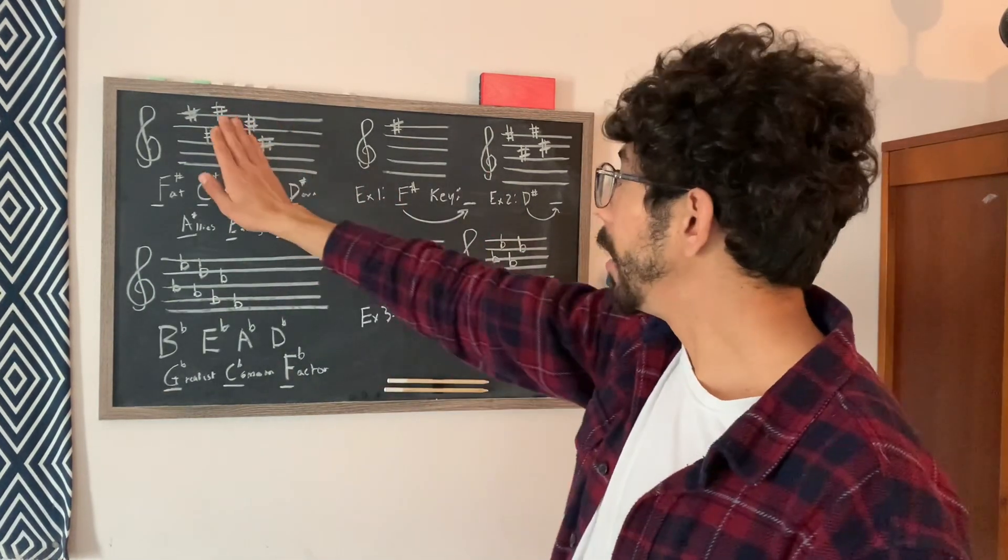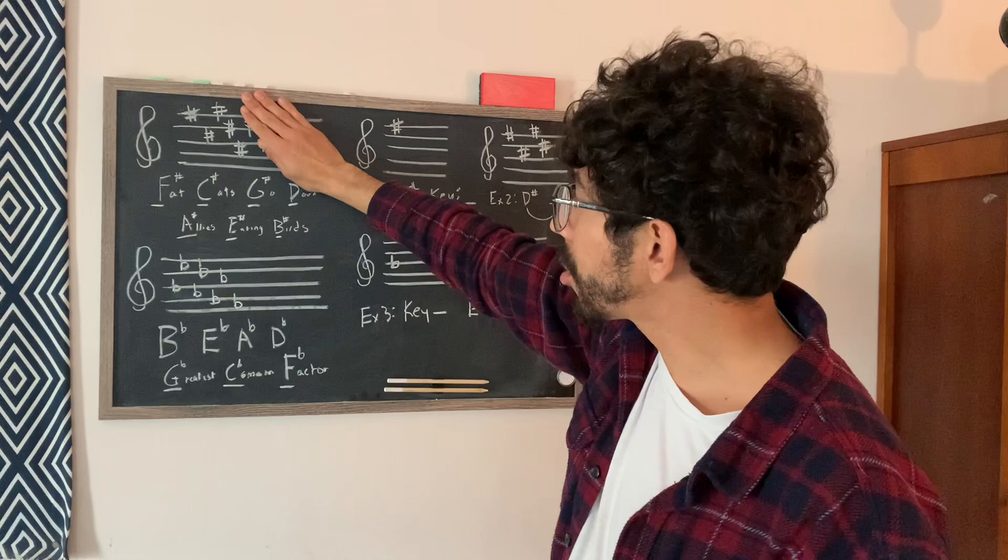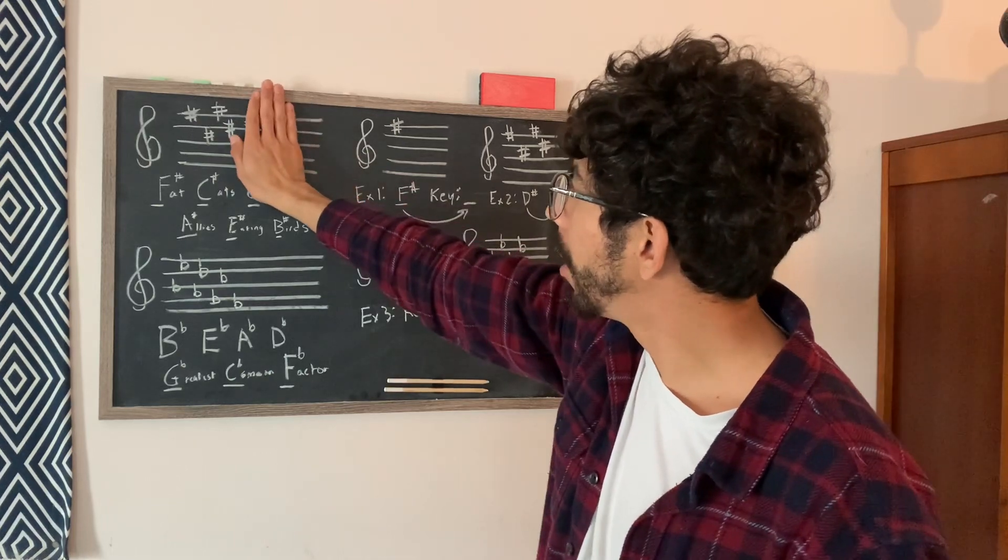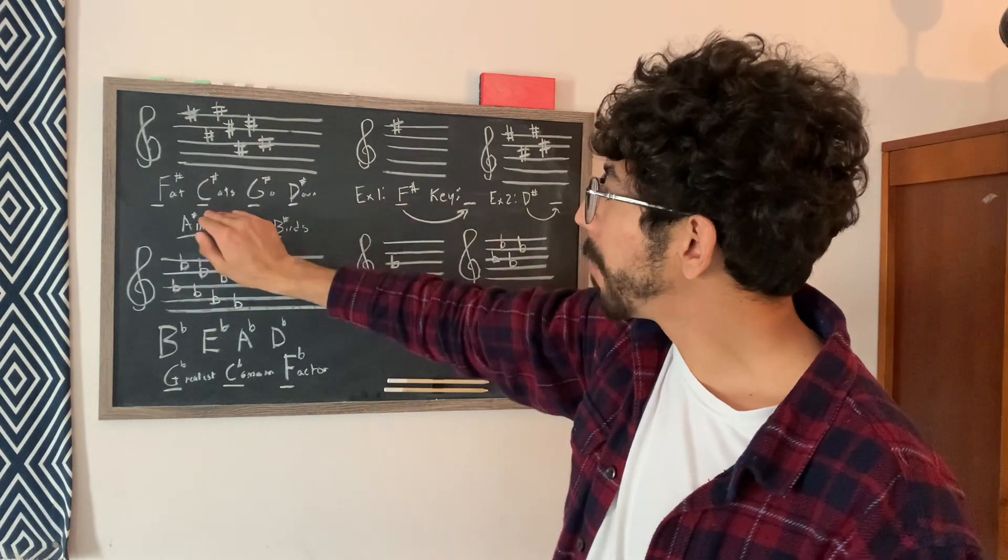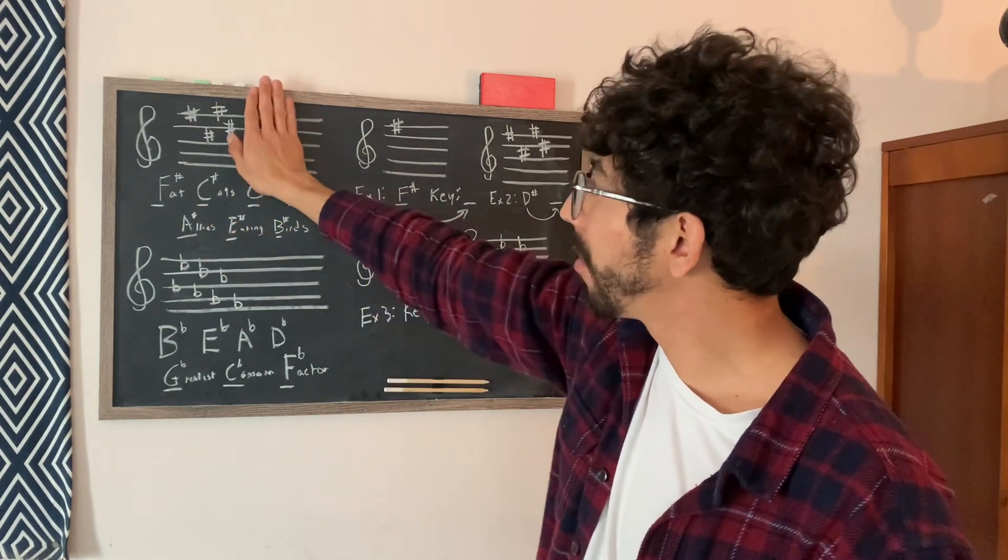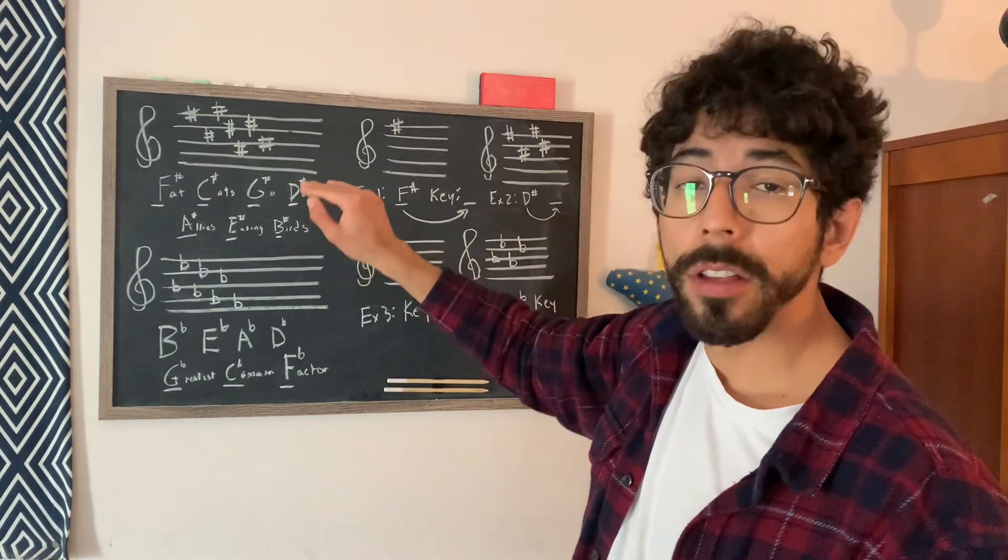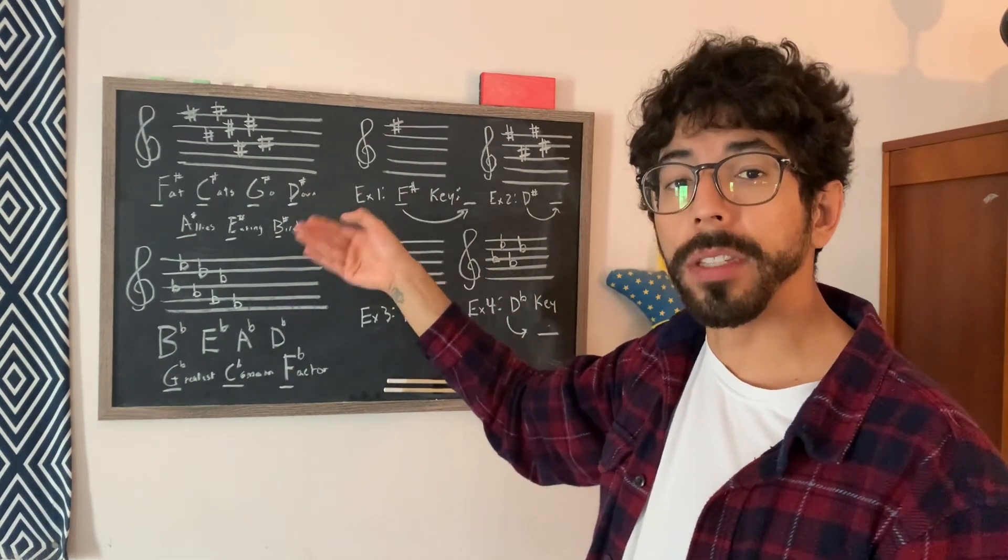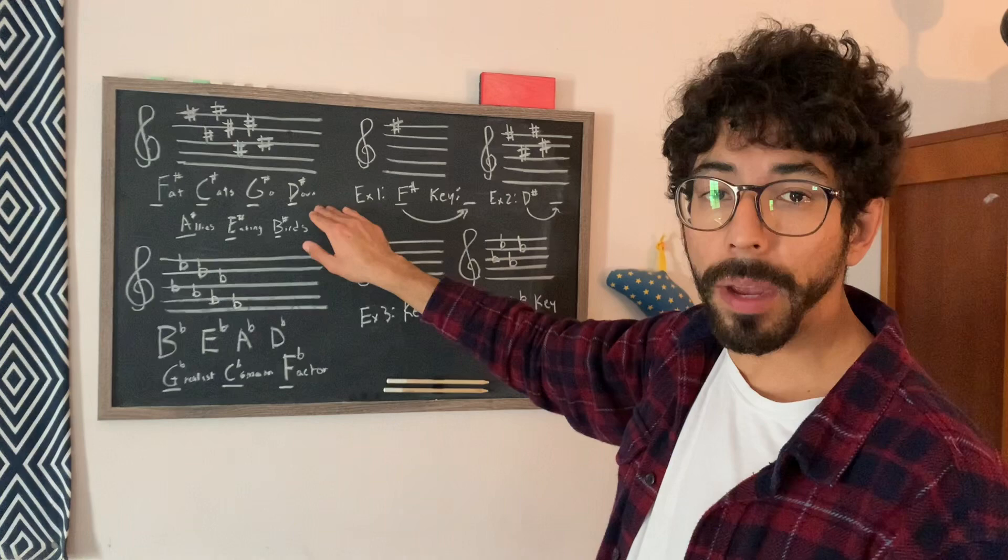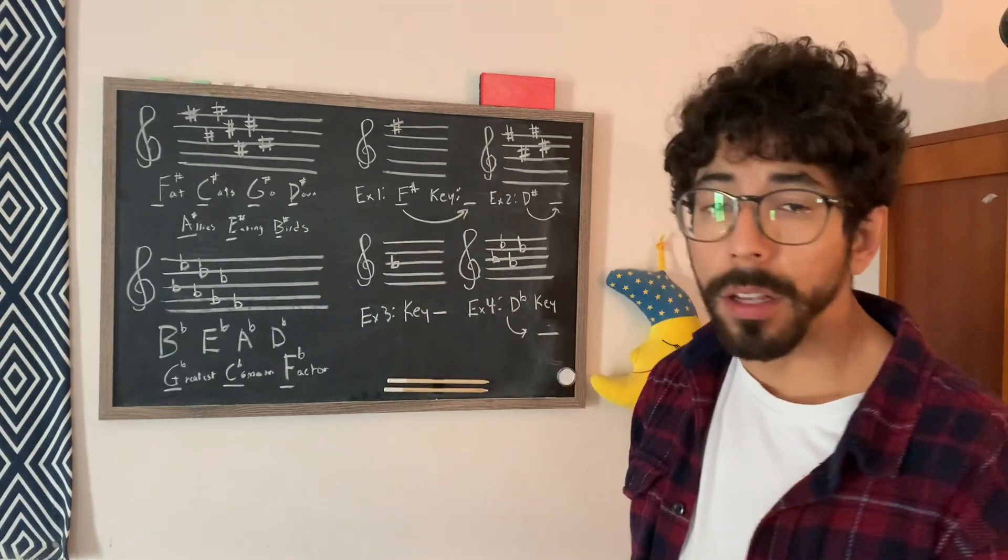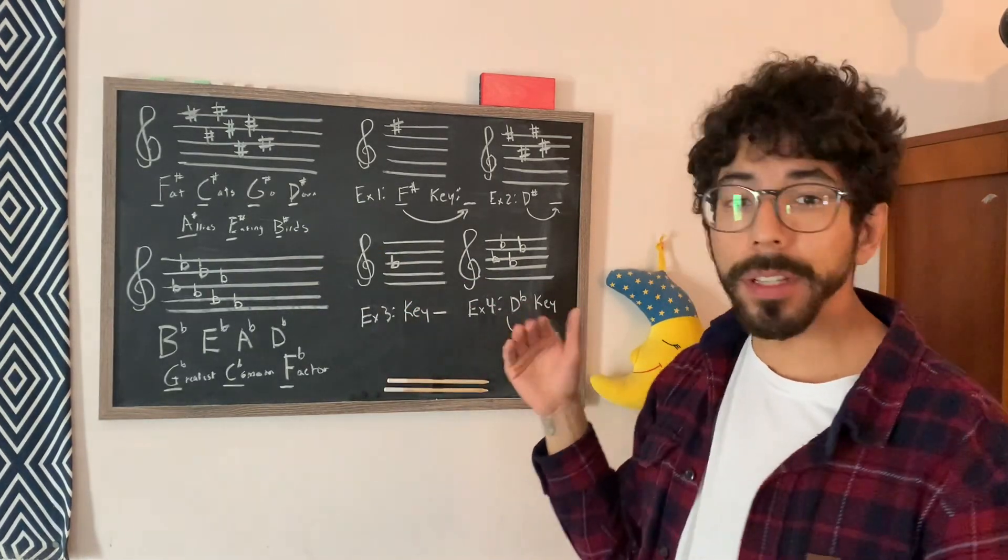And one more is, let's say we have a D-sharp. We have, oh, sorry, D-sharp, four sharps. So that's F-sharp, C-sharp, G-sharp, D-sharp. The last sharp is D-sharp. So the letter that comes after D is going to be E. So we are in the key of E major if there's four sharps. So we're going to do a couple of examples.